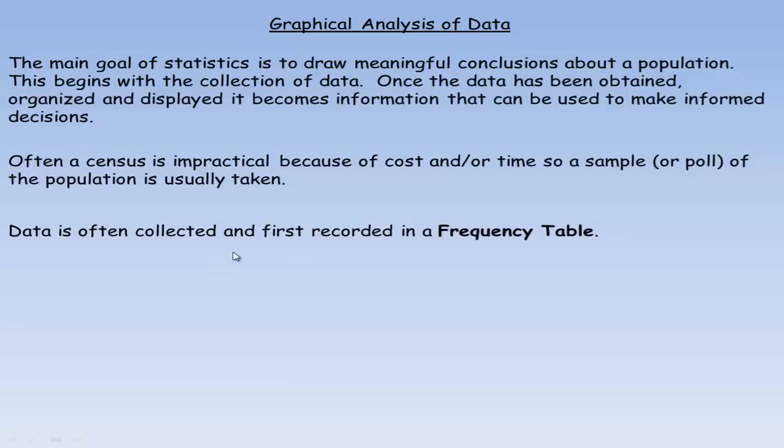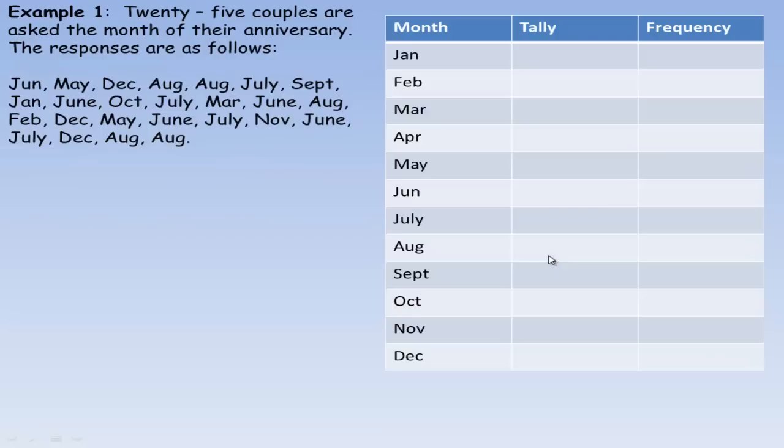Data is often collected and first recorded in a frequency table, and we're going to take a look at that in the first example. In this example, 25 couples are asked the month of their anniversary. We've got the months listed here, and June was the first one, so by June we would make a mark.